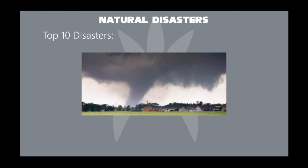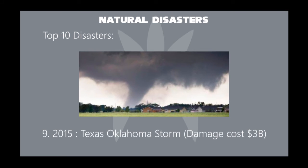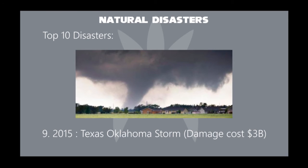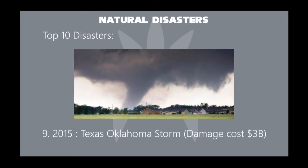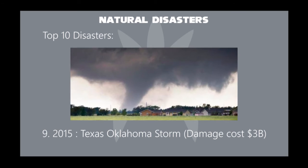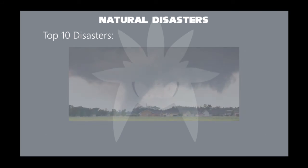In 2015, a slow-moving storm system dropped tremendous precipitation across much of Texas and Oklahoma during the nights of May 24 to 26, triggering record-breaking floods. Its damage cost was about $3 billion.